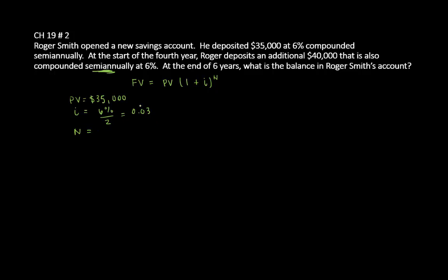Now N, N for periods. It's the first three years, but again it's compounded semi-annually, which means twice a year. So it's going to be 3 years times 2 for a total of 6 periods.